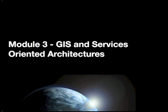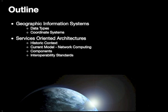Welcome to Geography 485-585-L, Module 3: GIS and Services-Oriented Architectures. Today we will be discussing concepts related to geographic information systems, particularly focusing on raster and vector data types as a refresher, coordinate systems, and information needed for coordinate transformation using command line utilities. We will also look at services-oriented architectures in a historic context and discuss the components of a geospatial services-oriented architecture and the interoperability standards that allow connectivity between those components.